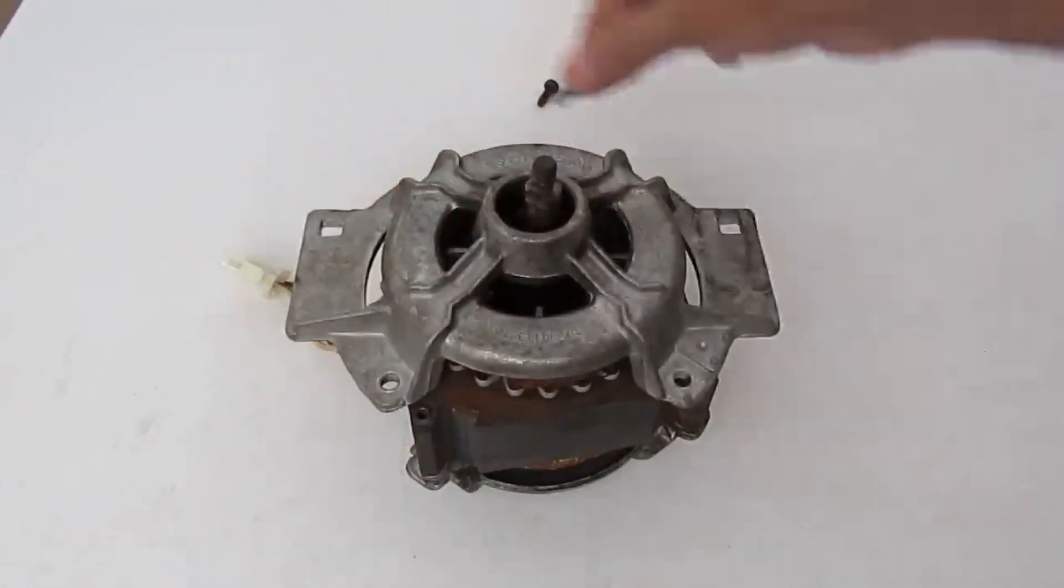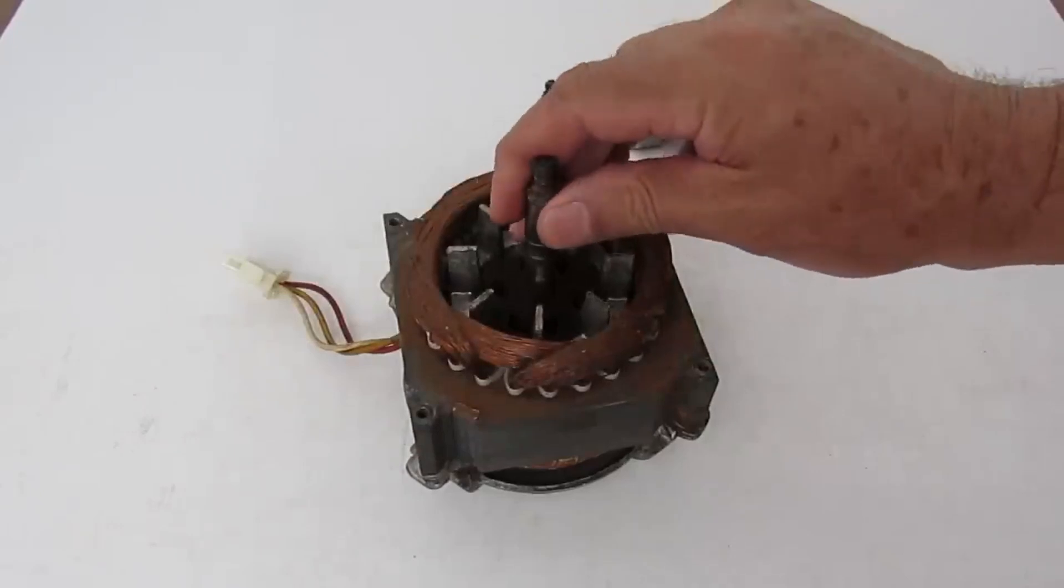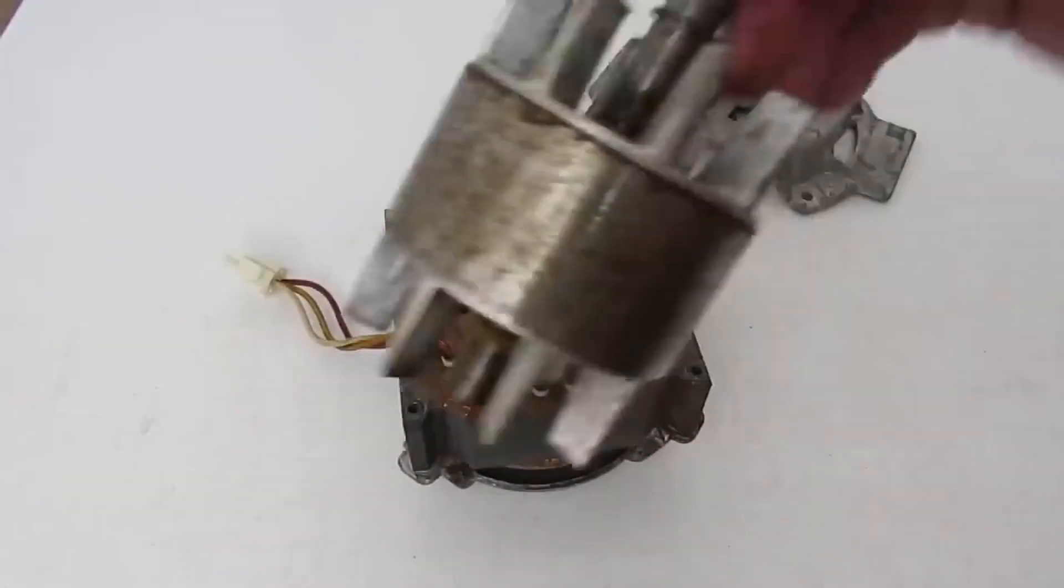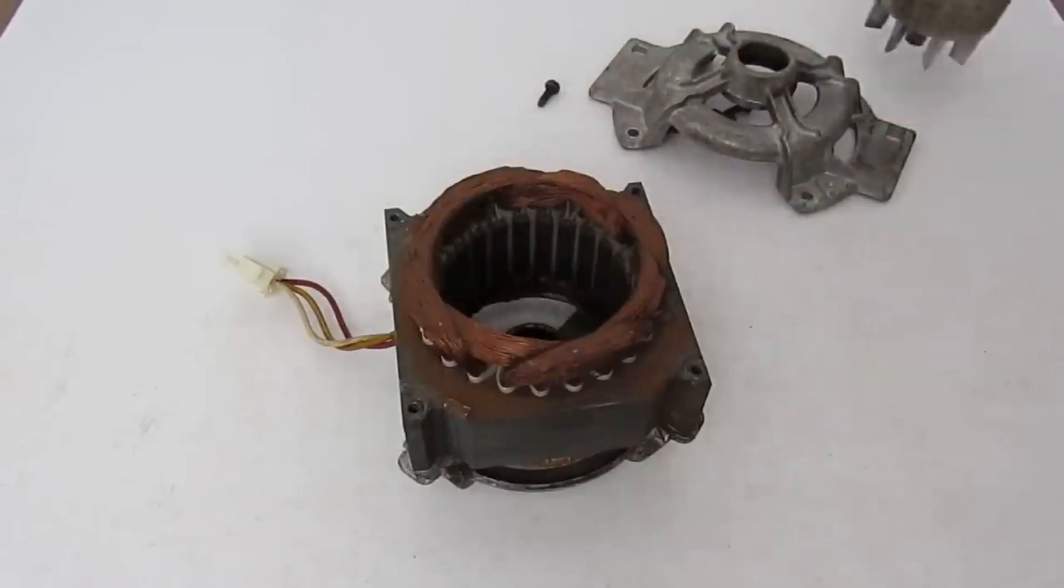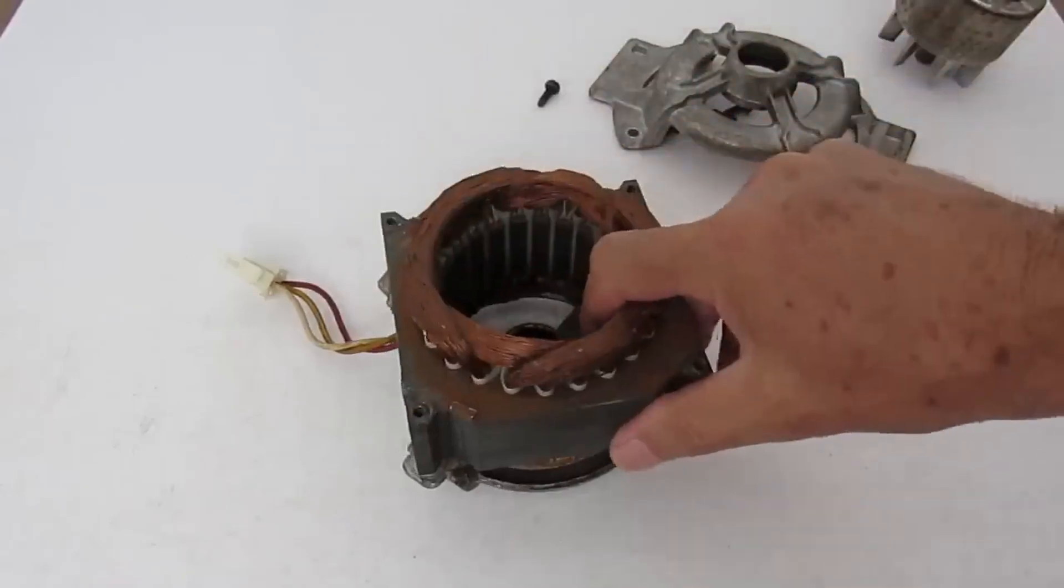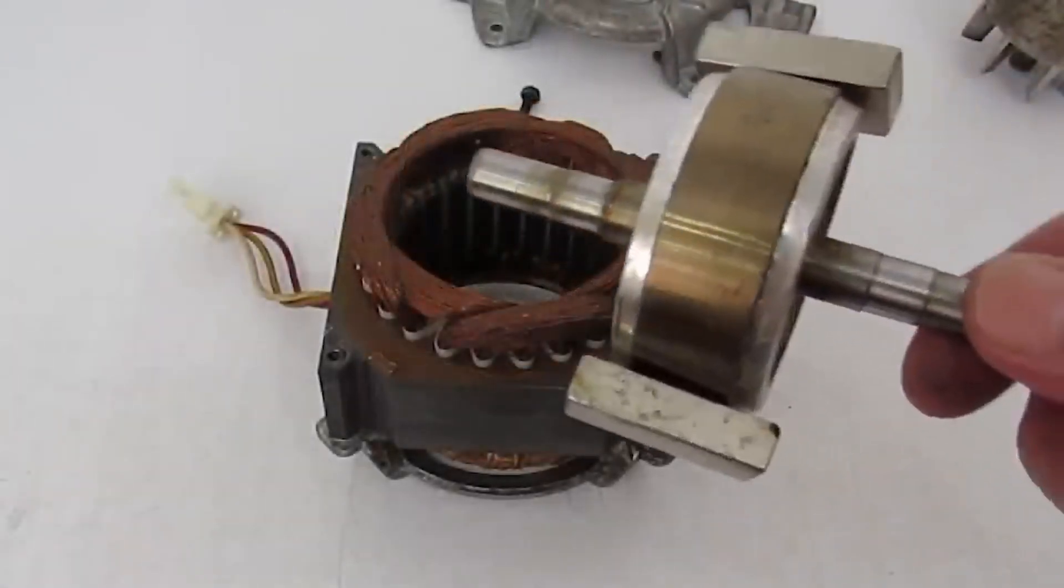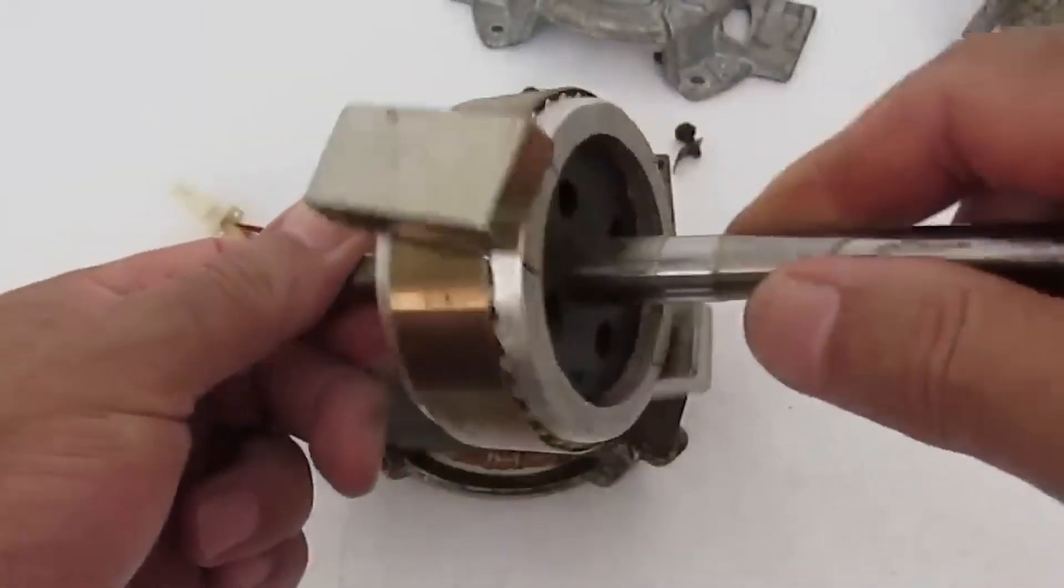The rotor is this central structure here, which rotates inside the motor. I am not going to do this with this one, because if it doesn't work I can reassemble my motor and it will work again. I am going to do this with this other rotor here, which is from another motor that is broken.